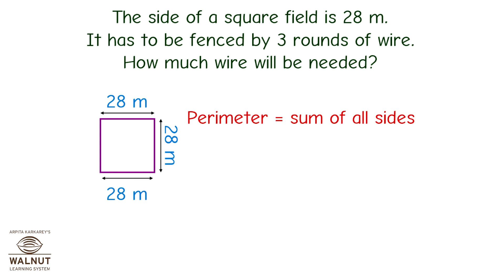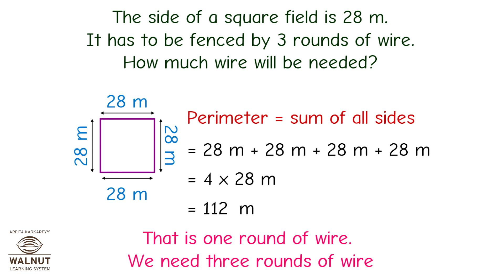Perimeter is equal to sum of all sides. That is equal to 28 meters plus 28 meters plus 28 meters plus 28 meters. That is equal to 4 multiplied by 28 meters. That is equal to 112 meters. That is one round of wire.